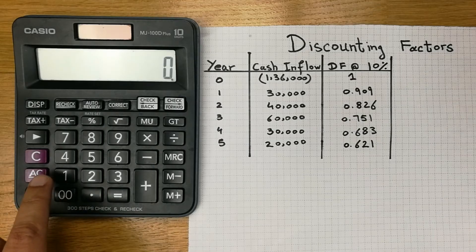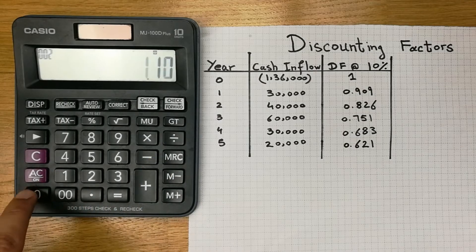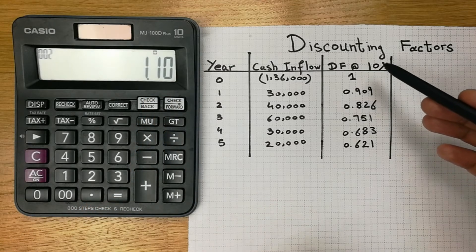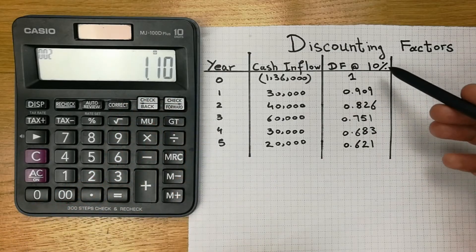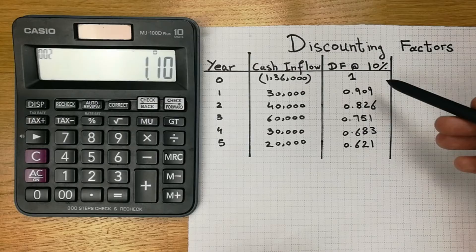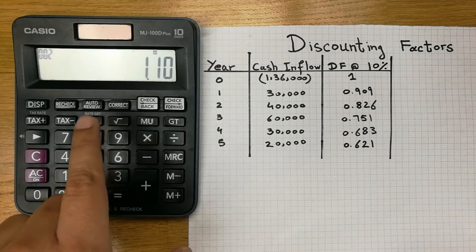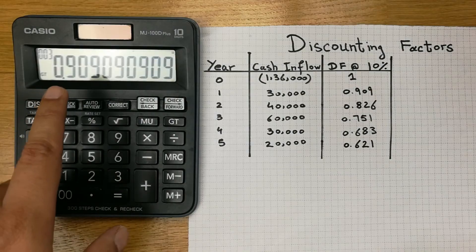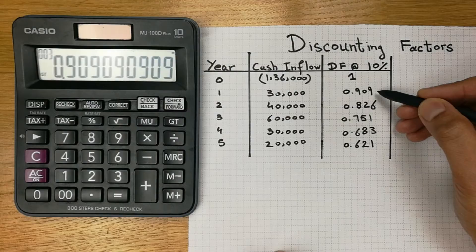Go on your calculator and press 1 divided by 1.10. We divide by 1.10 because the discount rate is 10%. If it is 9% we divide by 1.09, or if it is 8% we divide by 1.08. Press the equals button and the answer is 0.909, as you can see on screen.